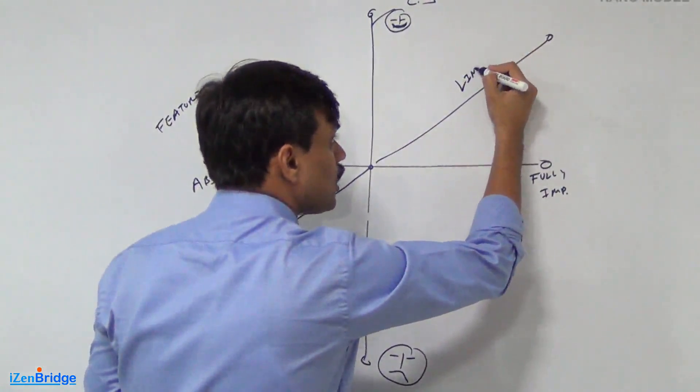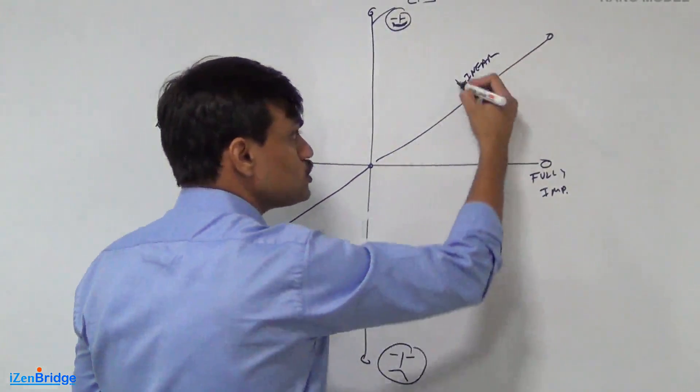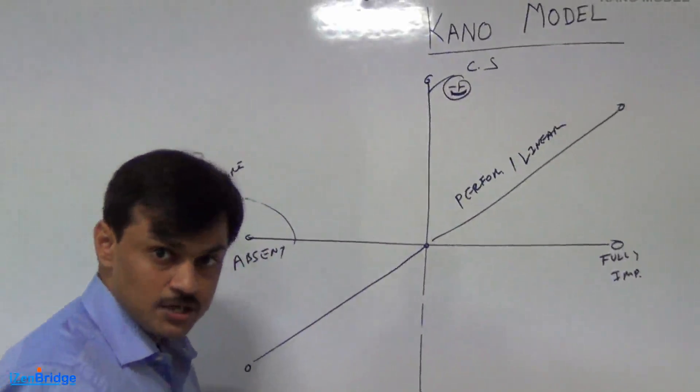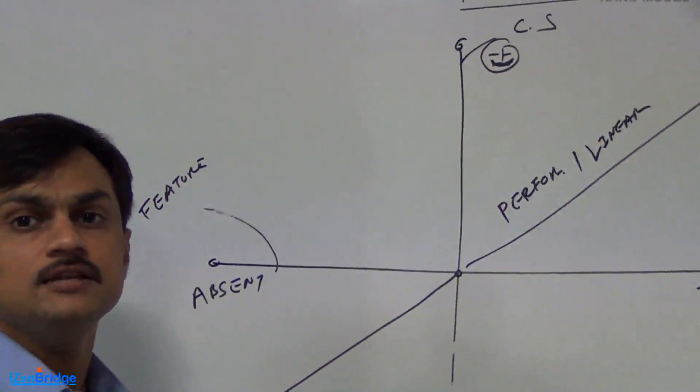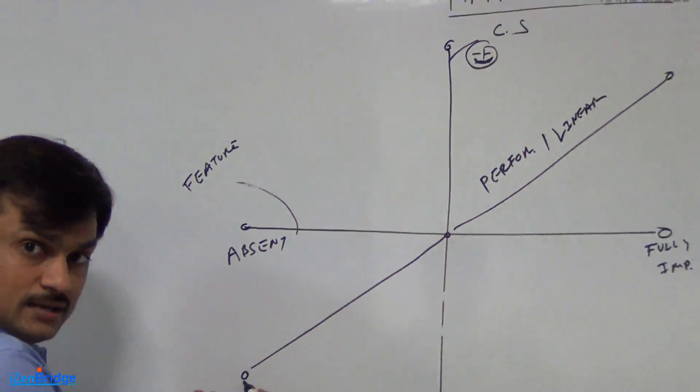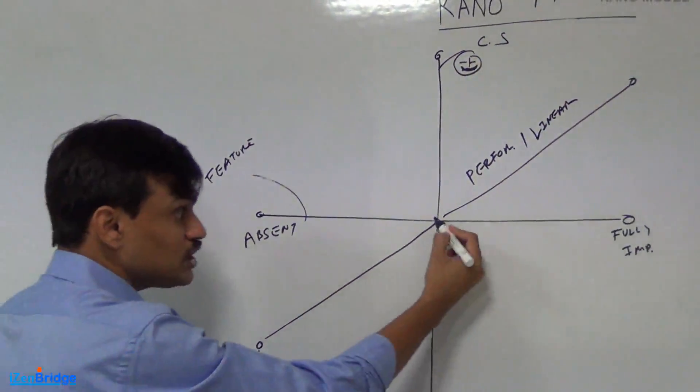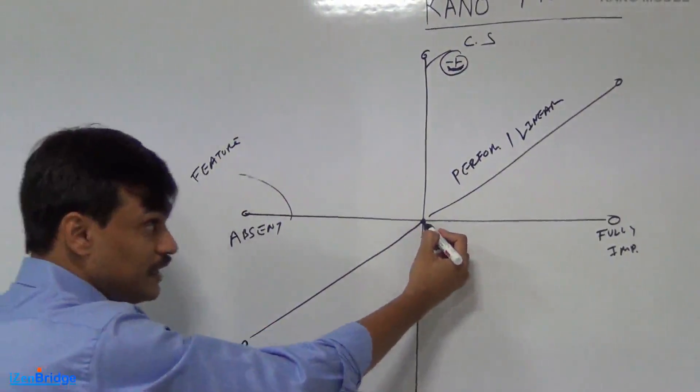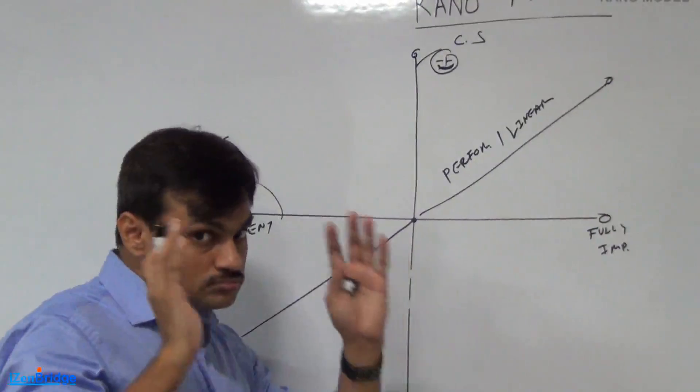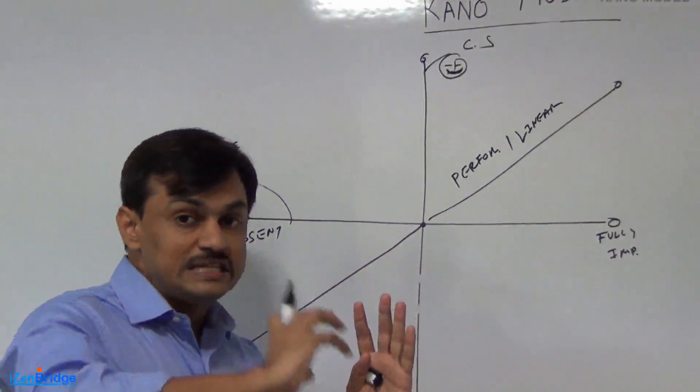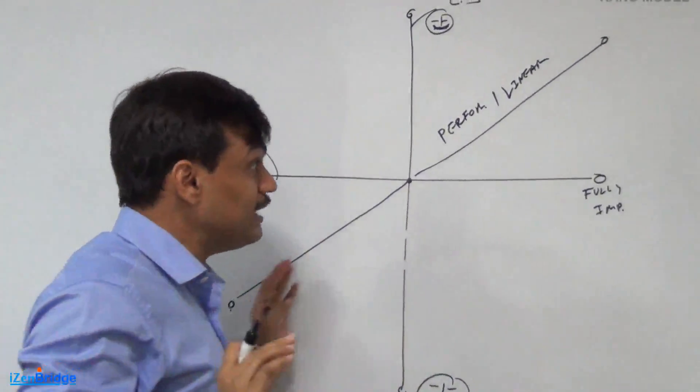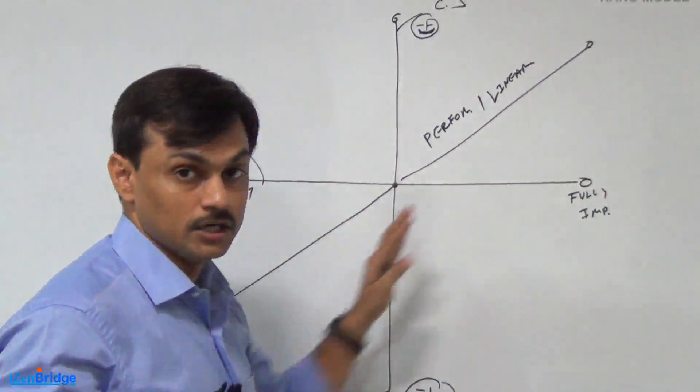So, these type of features are called linear features. Sometimes they are also called performance features. In case of a website, the response time is a linear feature. If the website takes 60 seconds to load, the customer would be very dissatisfied. If it takes 30 seconds, he would be neutral. If it takes 5 seconds, the customer would be happy. So, the type of features where customer satisfaction is linearly proportionate or linearly related to the implementation of it falls under this category.